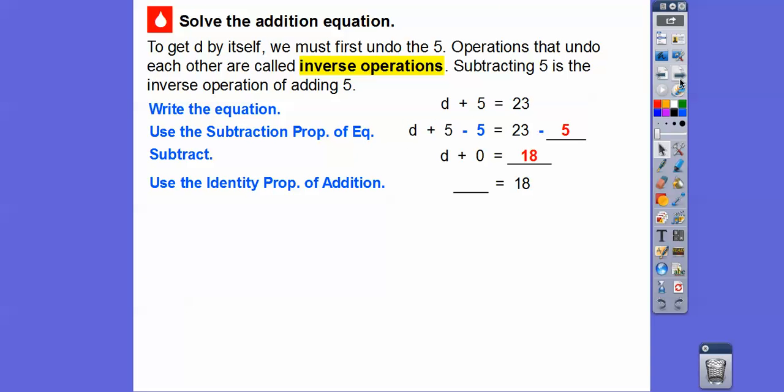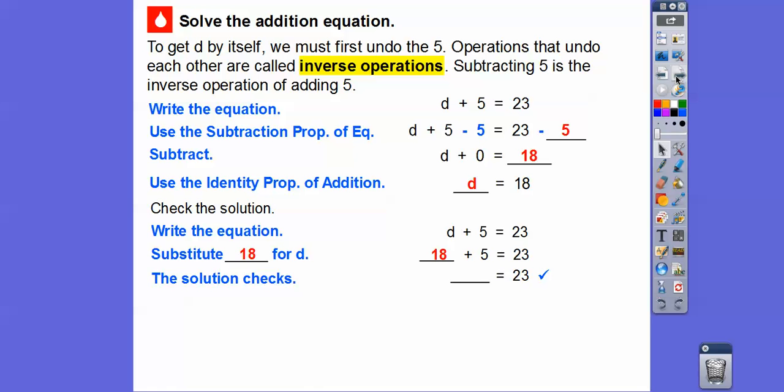The identity property - remember anything you add to 0 is called the identity property of addition. Most of my students forget that. Anything plus 0 just equals itself, so d equals 18. Let's check the solution. It's always a good idea to check your solution, especially if you have a little extra time. We're going to substitute in our answer of 18 for d. The solution checks because 18 + 5 does equal 23. So the solution means that Ernesto must run 18 more miles.